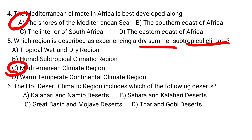Sahara from the north and Kalahari from the south are the hot desert climatic regions. So the answer is B.